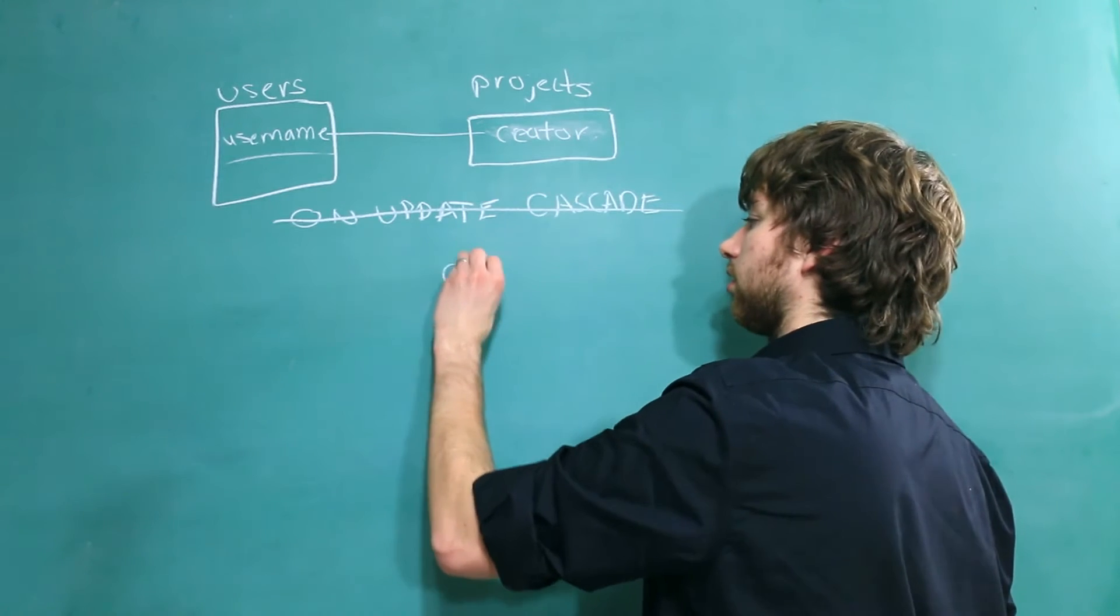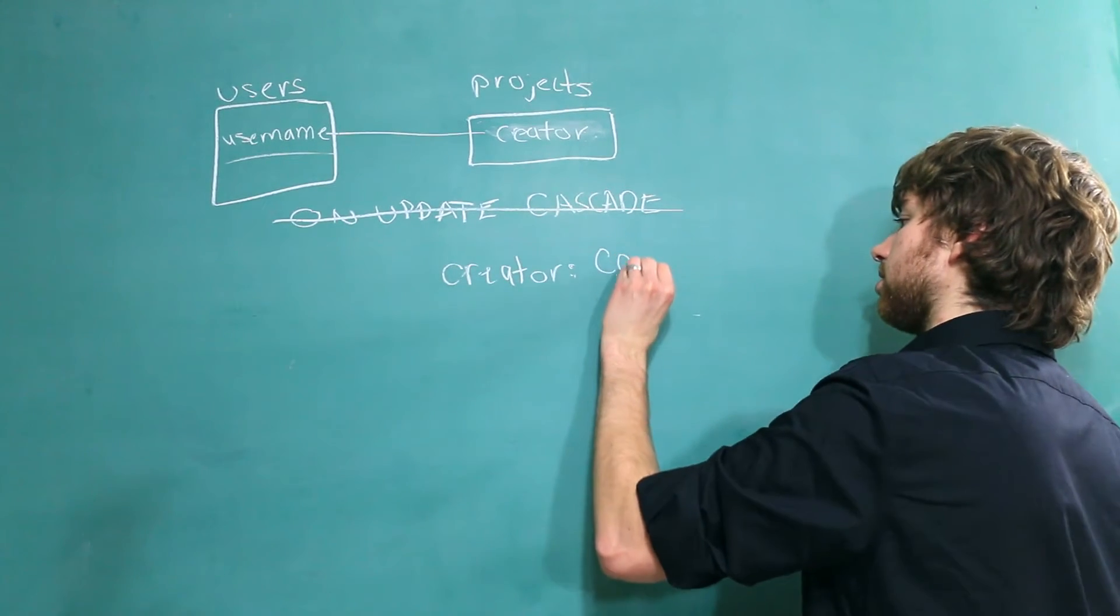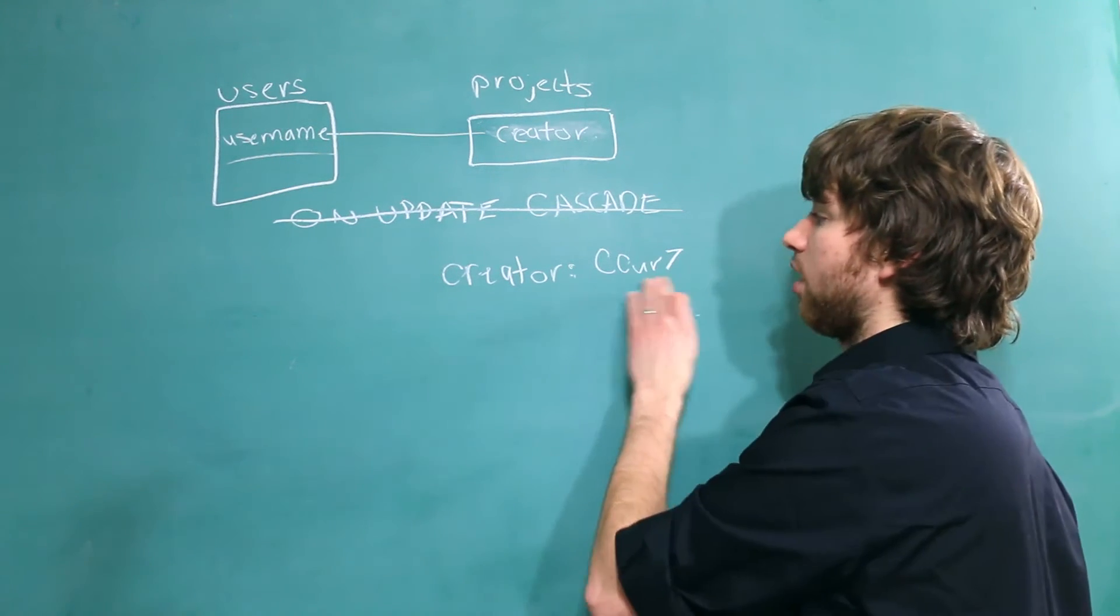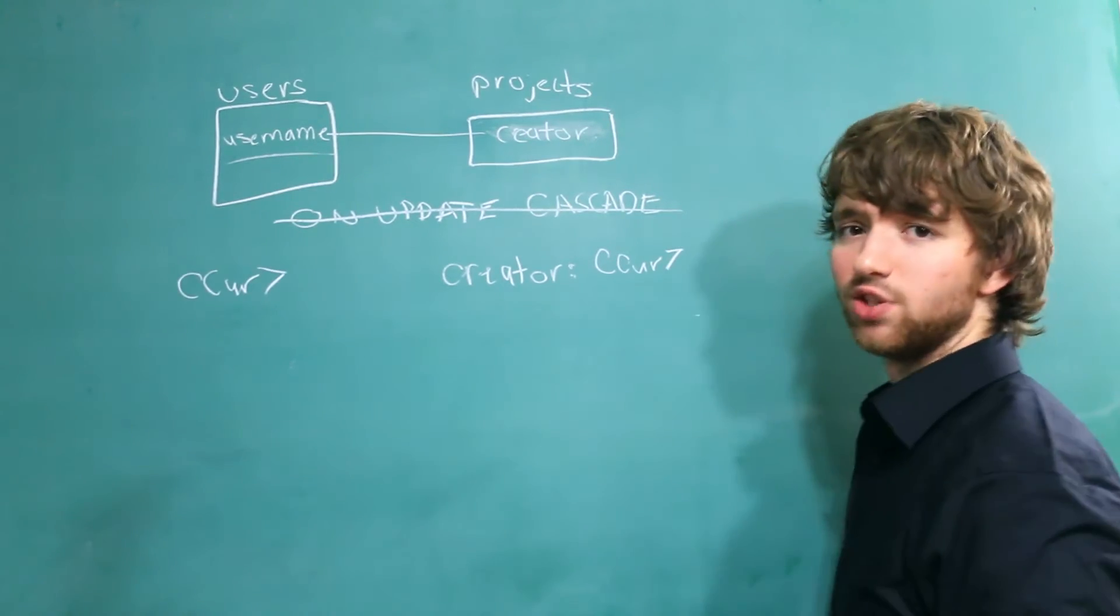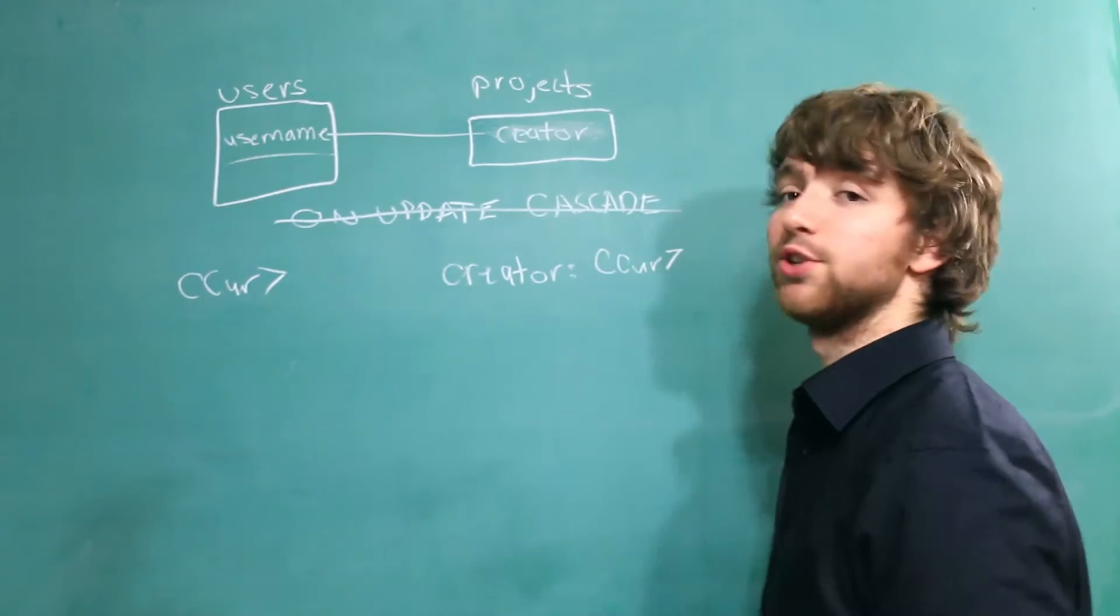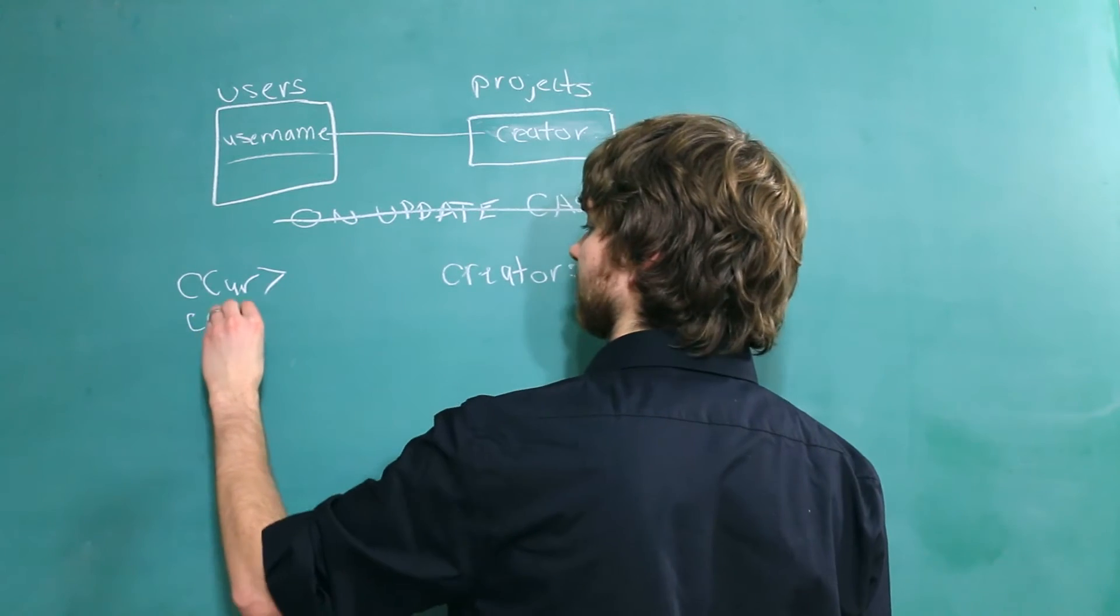But let's say we have a creator, and his name is Ccur7. And that obviously has to match a user in the users table. But then Ccur7 is all like, you know what, this name's stupid. I'm gonna change it. And he changes his name to Ccur7.